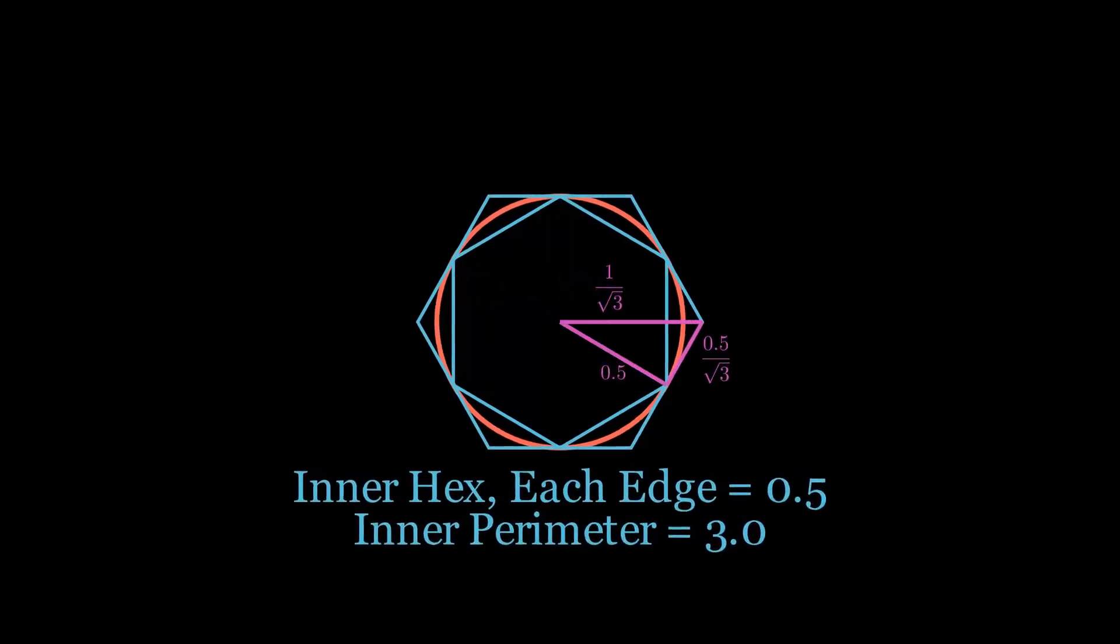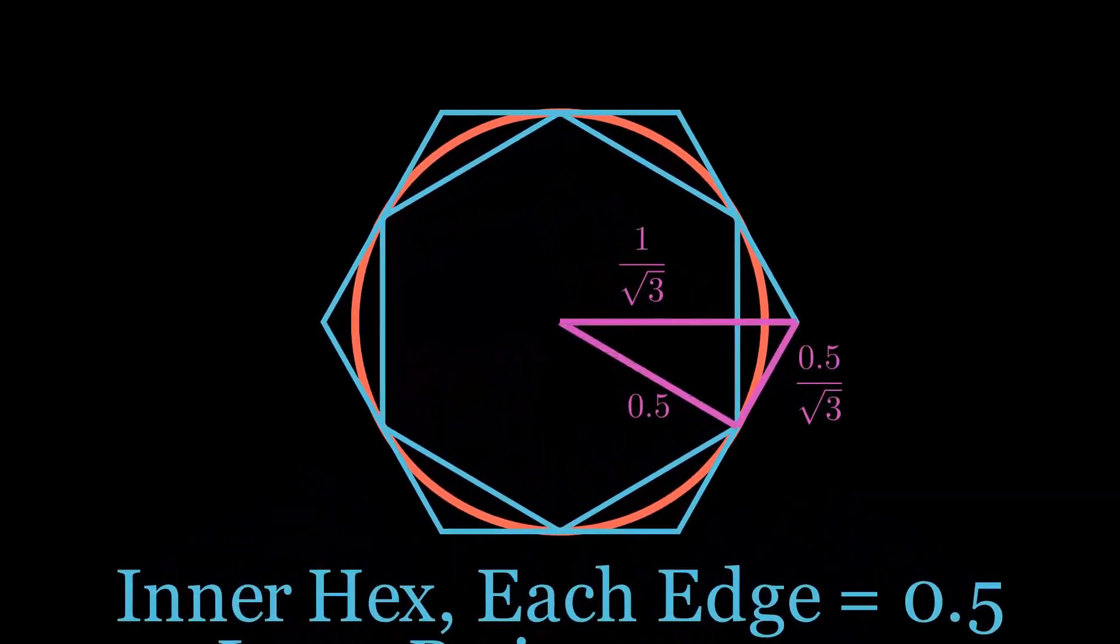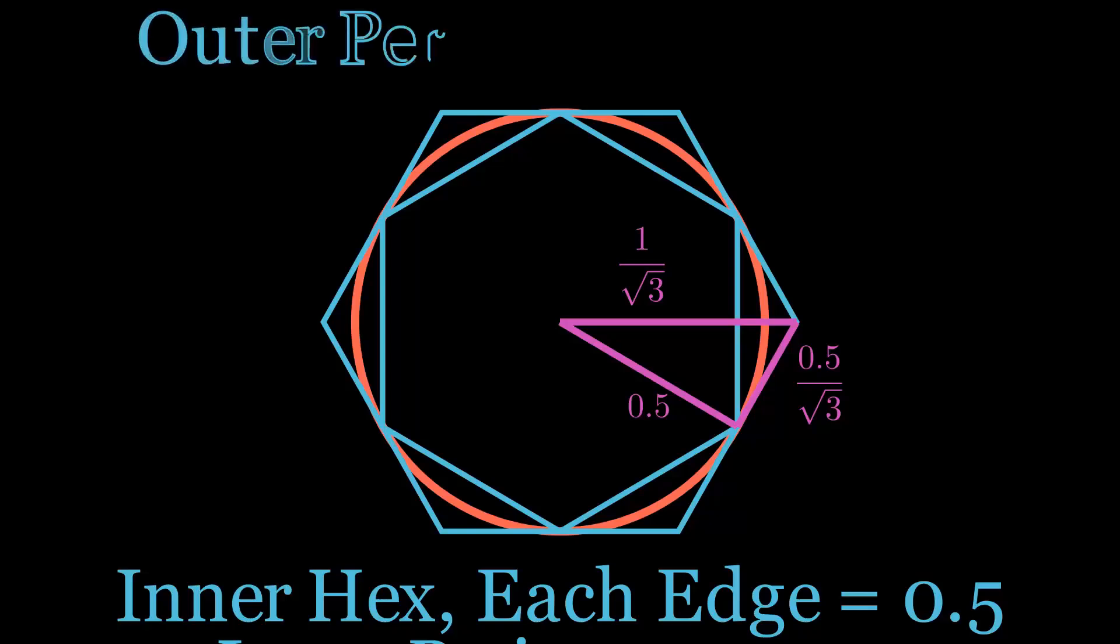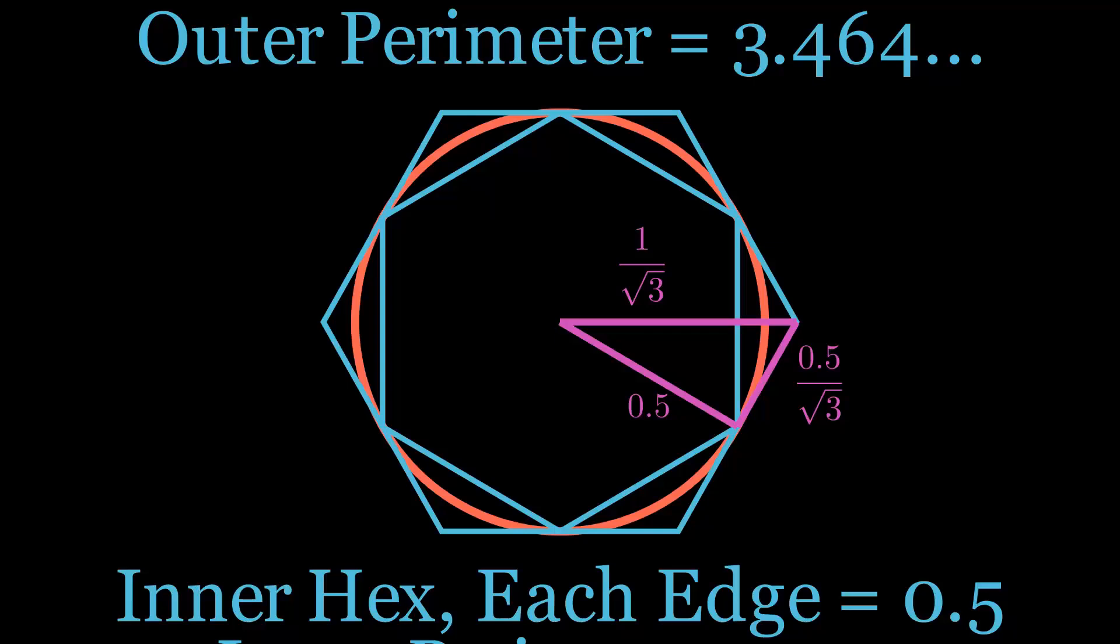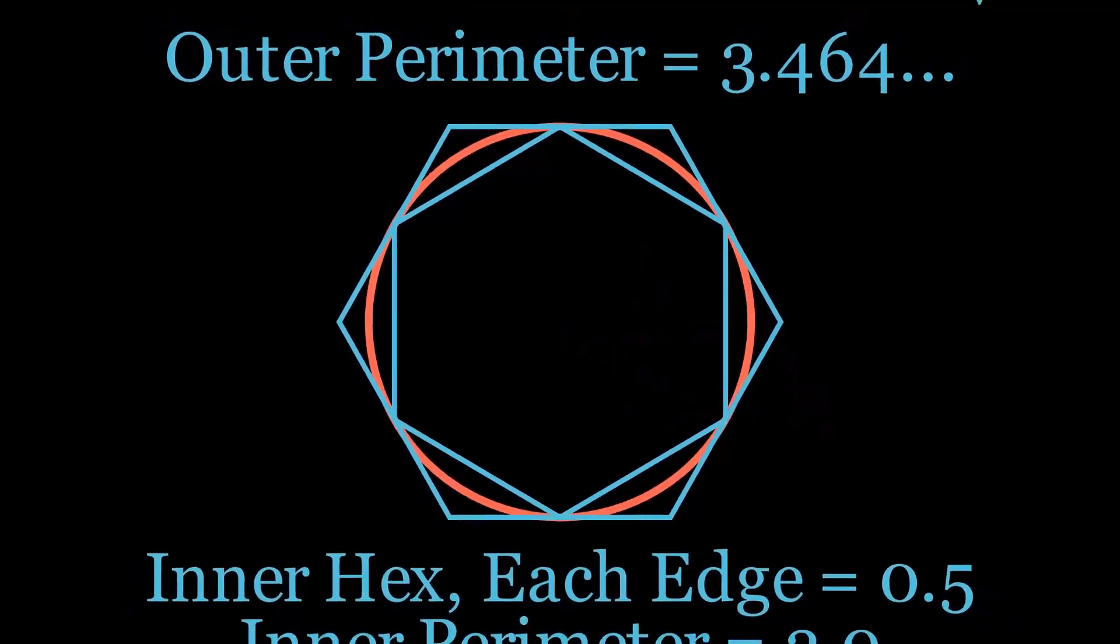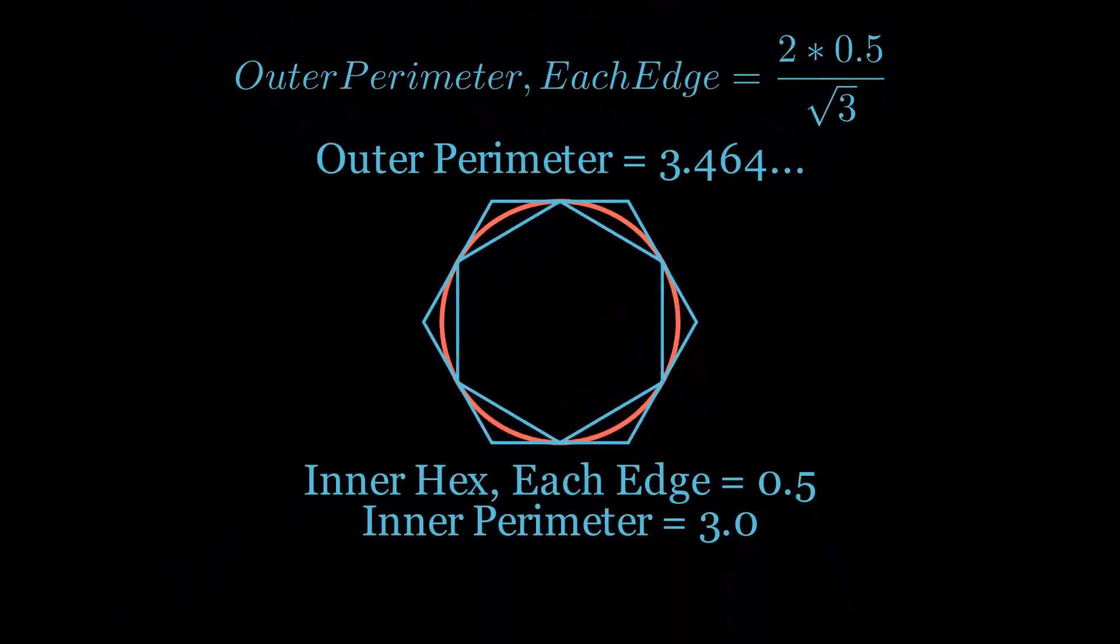For the outer hexagon, we also have equilateral triangles. But here we know the triangle's height rather than its edge length. So we split the triangle in half. This results in a 30-60-90 triangle, which has special properties that Archimedes would have known. Each of the 6 perimeter edges is 1 divided by the square root of 3, for a total length of 3.464.